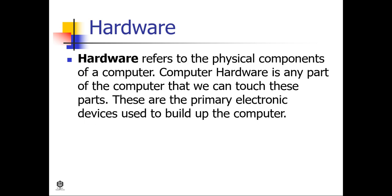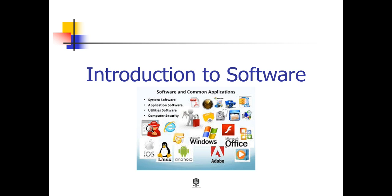Another definition of hardware: it refers to the physical components of a computer. Computer hardware is any part of the computer that we can touch. These are the primary electronic devices used to build up the computer. Examples of hardware are the processor, memory devices, monitor, printer, keyboard, mouse, and the central processing unit. Let's proceed to the introduction to software.